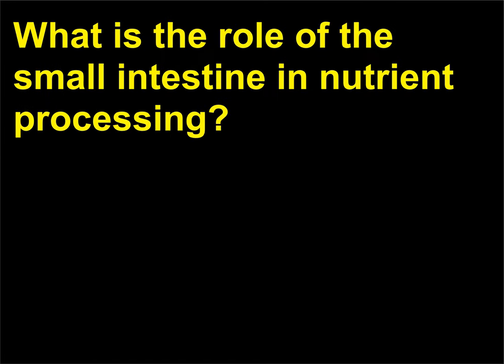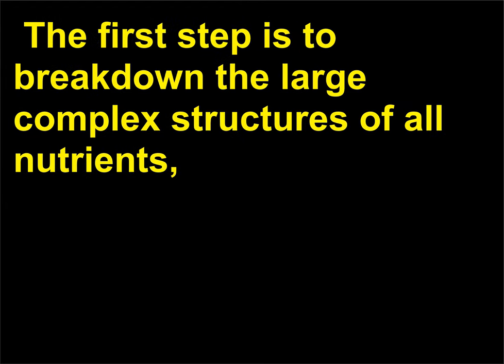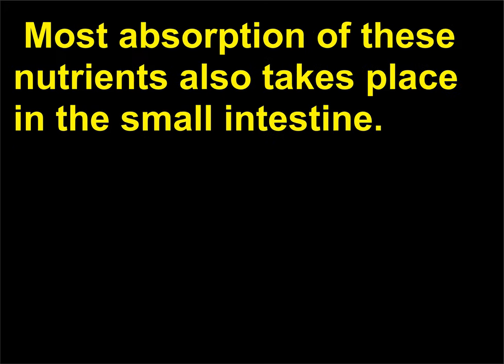What is the role of the small intestine in nutrient processing? The small intestine is the site of most nutrient processing in the body. The first step is to break down the large complex structures of all nutrients — including carbohydrates, lipids, proteins, and nucleic acids — into smaller units. Most absorption of these nutrients also takes place in the small intestine.